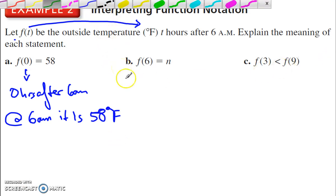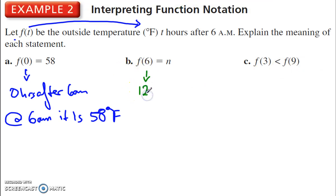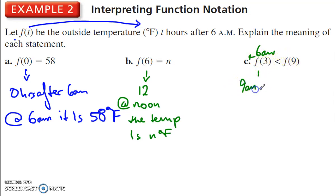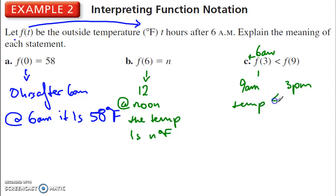For f of 6: 6 hours after 6 a.m. is at 12, or noon. At noon, the temperature is n degrees Fahrenheit — some unknown amount, the noon temperature. For f of 3: this is 3 hours after 6 a.m., so that is 9 a.m. And 6 a.m. plus 9 gives 15, which is 3 p.m. So the temperature at 9 a.m. is less than the temperature at 3 p.m. That is what that would mean.